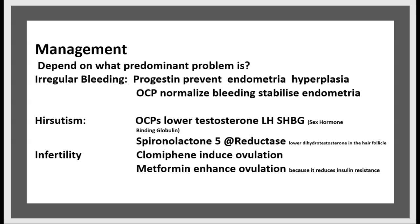Management depends on what the predominant problem is. For irregular bleeding, progesterone prevents endometrial hyperplasia, and oral contraceptive pills normalize bleeding and stabilize the endometrium. OCP pills also lower testosterone, LH, and sex hormone binding globulin. Spironolactone and 5-alpha reductase inhibitors lower dihydrotestosterone in hair and follicles. For infertility, clomiphene induces ovulation, and metformin enhances ovulation because it reduces insulin resistance.